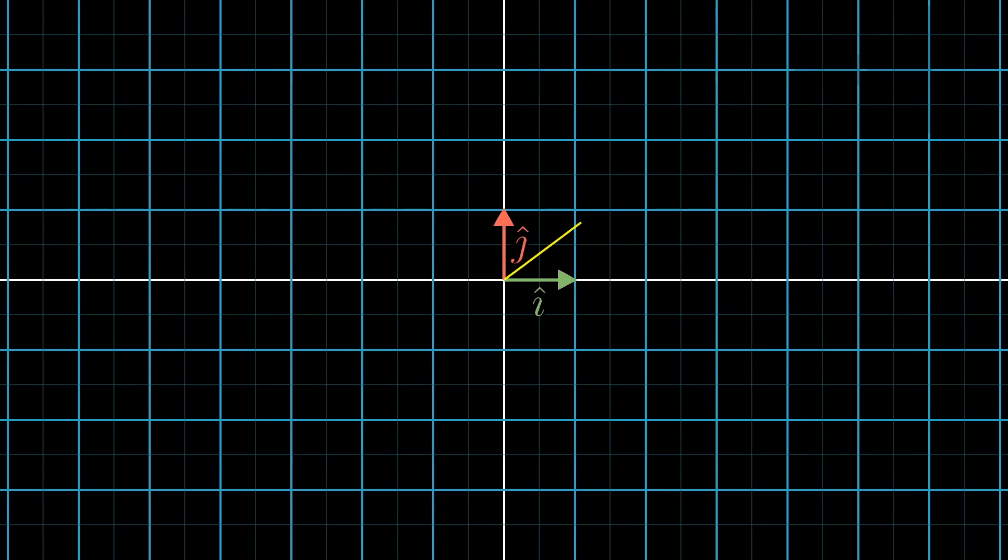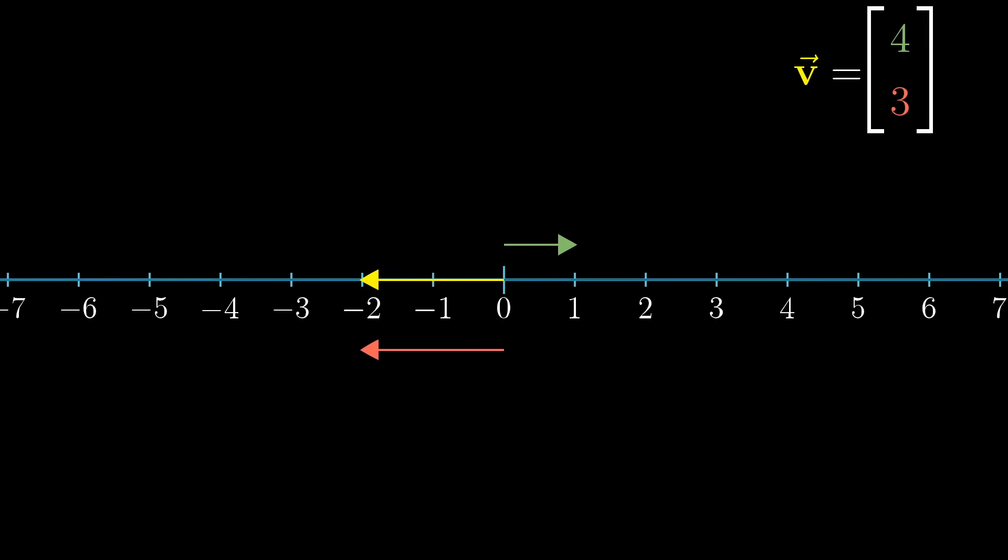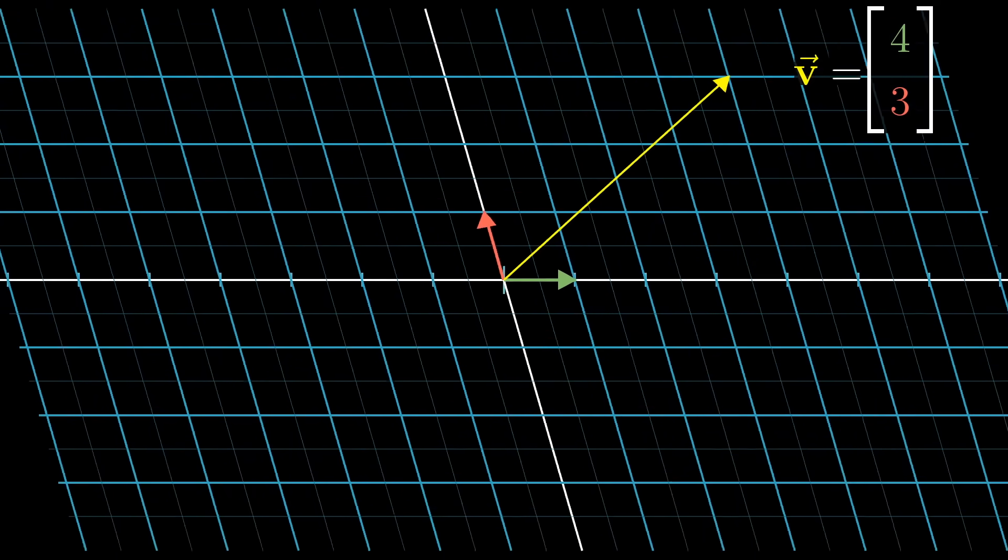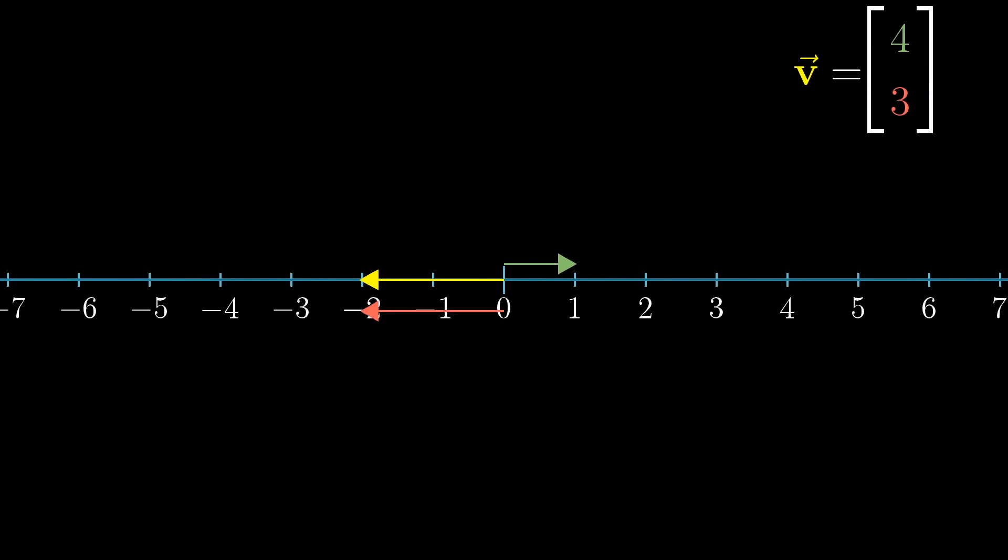Let's walk through an example of what it means to apply one of these transformations to a vector. Let's say you have a linear transformation that takes i-hat to 1 and j-hat to negative 2. To follow where a vector with coordinates, say, 4, 3 ends up, think of breaking up this vector as 4 times i-hat plus 3 times j-hat. A consequence of linearity is that after the transformation, the vector will be 4 times the place where i-hat lands, 1, plus 3 times the place where j-hat lands, negative 2, which in this case implies that it lands on negative 2.